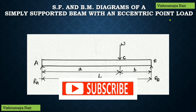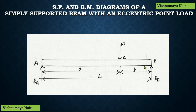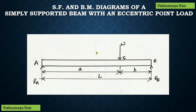If you haven't subscribed to the channel yet, please do subscribe and press the bell icon — that gives me the motivation to make more videos. Here I've shown a simply supported beam with an eccentric load W acting at a distance of A meters from the left end and B meters from the right end, and the total length of the beam is L. The load W is not acting at the center of the beam, which is why it's known as an eccentric load.